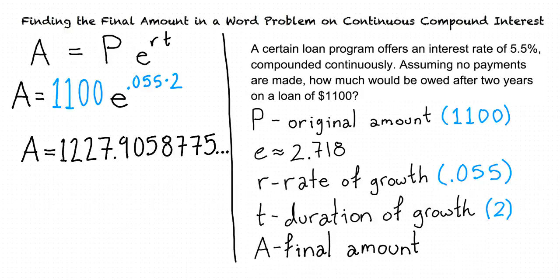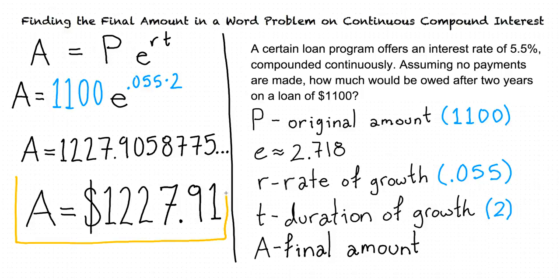Since we're dealing with money, we should round this to the nearest cent. So we should only have two decimal places in our final answer. There is a 5 in the third decimal place, so we should round the second decimal place up from 0 to 1 and cut off the rest. This gives us a final answer of $1,227.91.